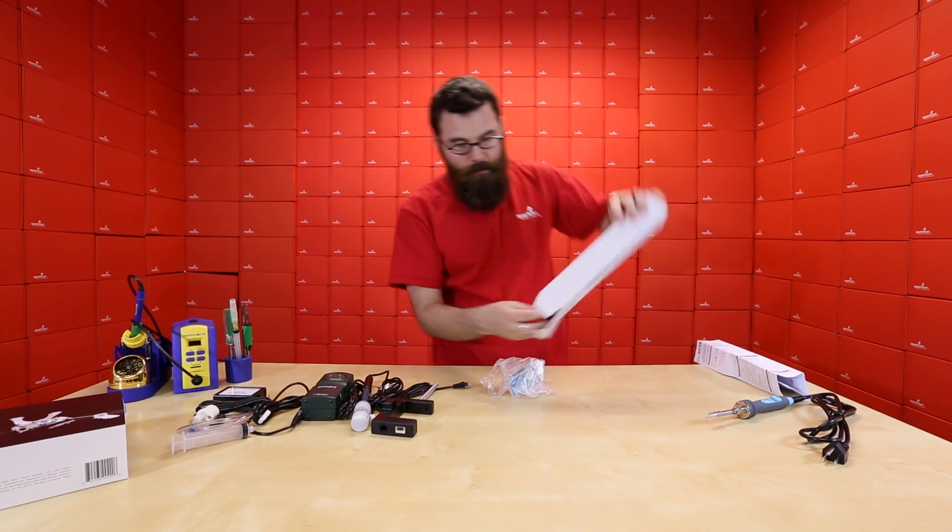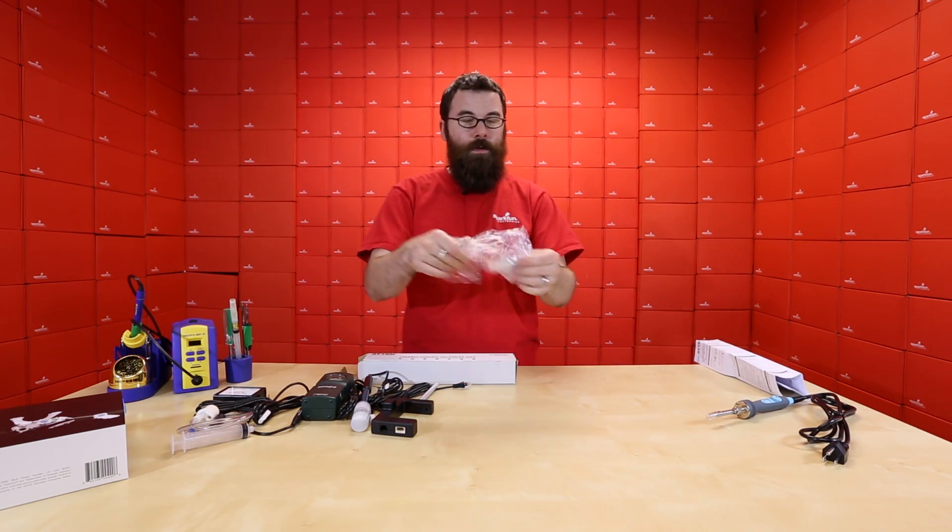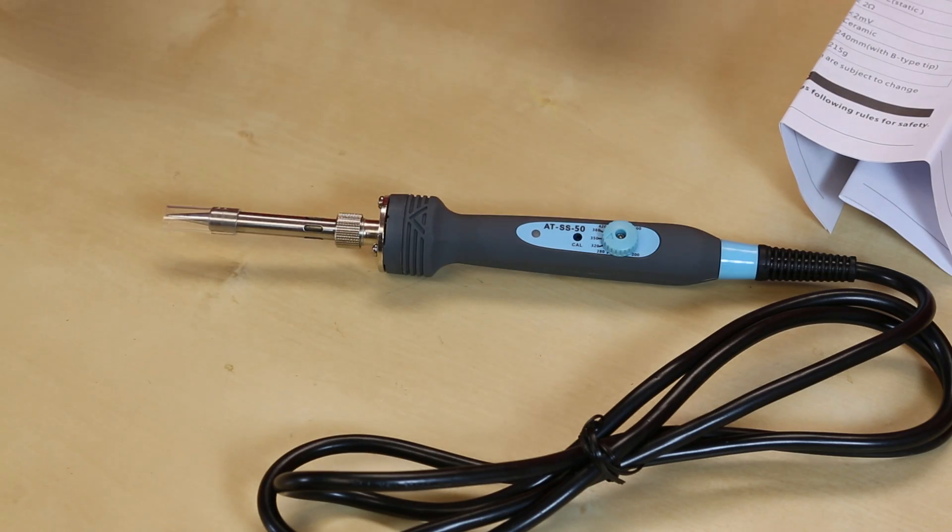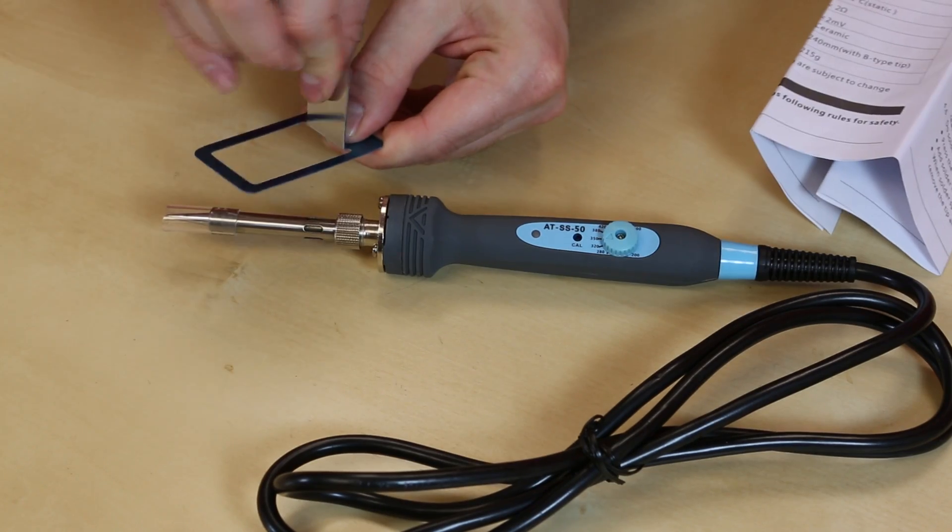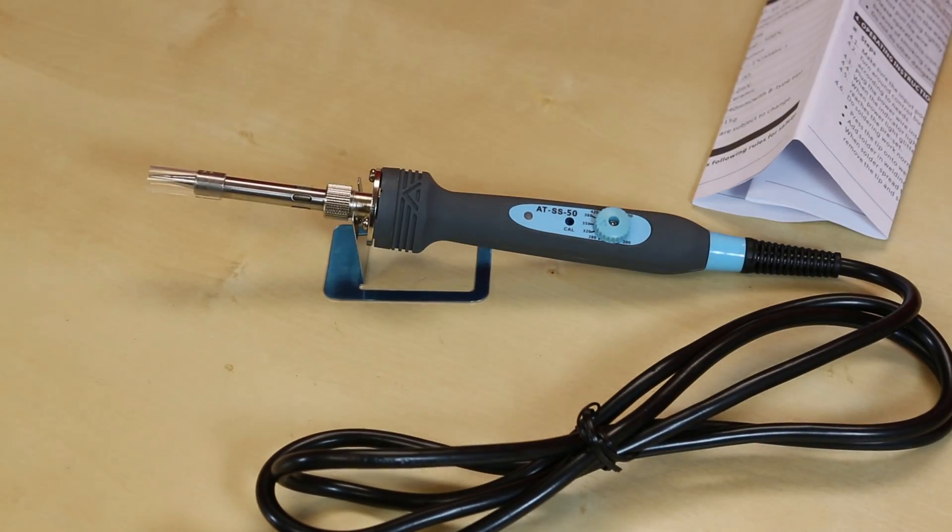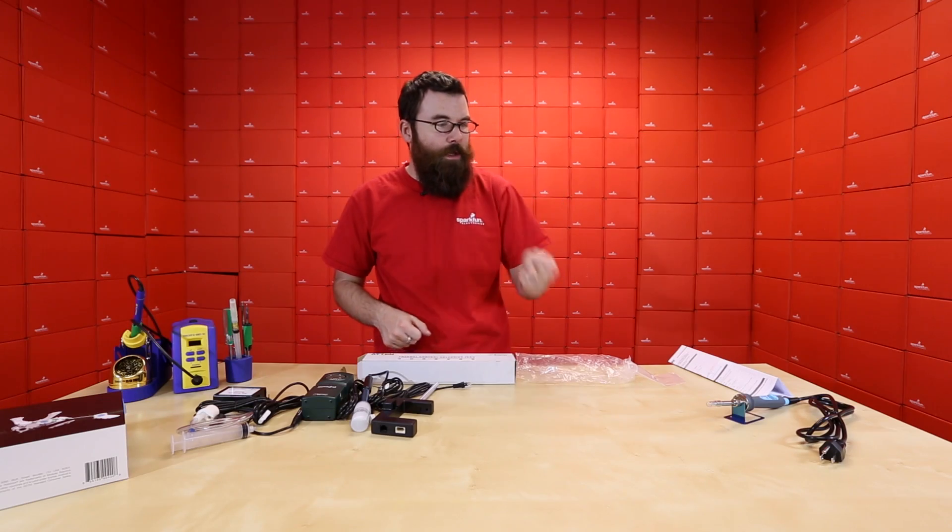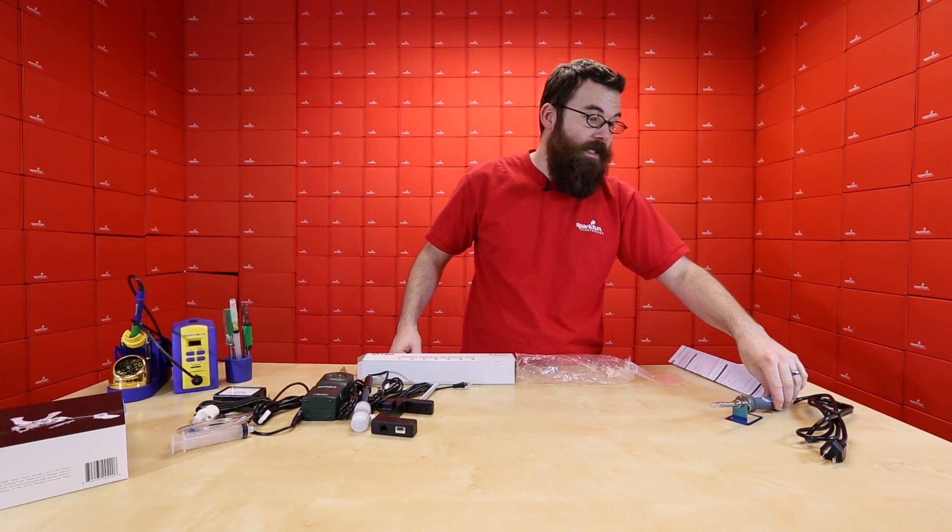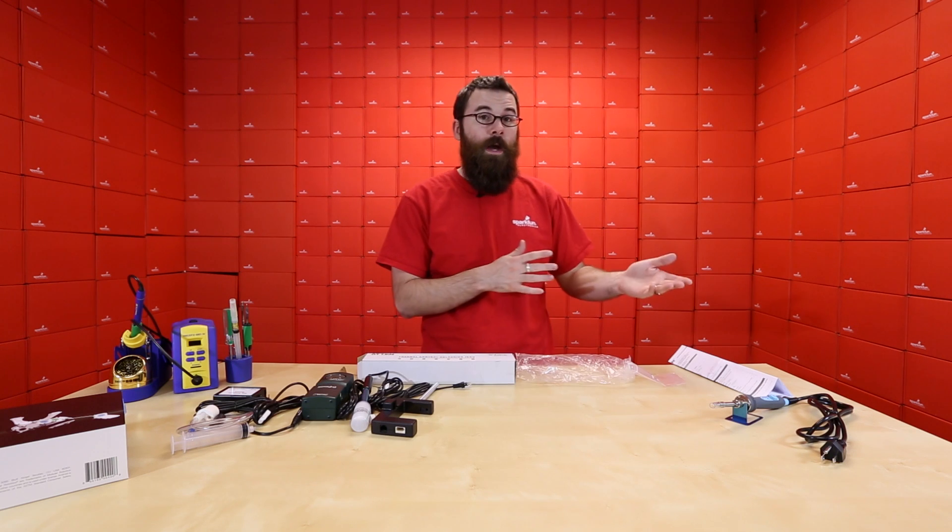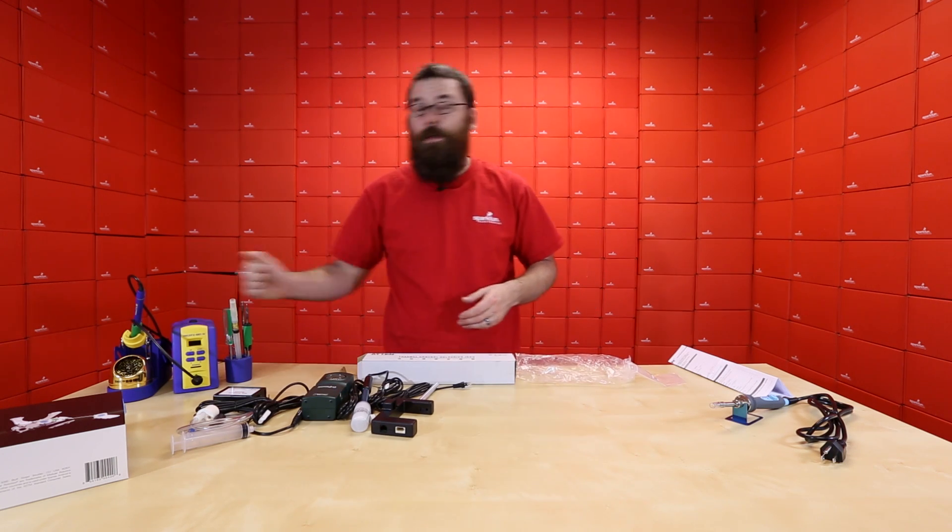And also, the iron comes with a little stand, which is right here. You just pop this out, fold this up, and you have a nice little place to rest your iron. So if you're looking for something a little bit nicer than the really cheap irons and you need some temperature adjustment, check out this guy if you don't have room or don't want to invest in one of the soldering stations.